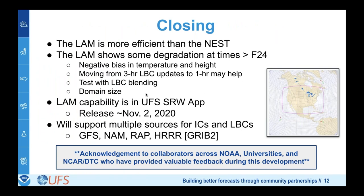In closing: the LAM is more efficient, not surprisingly. We do see some degradation after forecast hour 24, with a negative bias creeping in — likely due to the three-hour lateral boundary update frequency being too coarse; finer updates on the order of one hour would probably help. The limited area capability is missing two-way feedback that the nest has. The limited area capability will be part of the UFS short-range weather app release in November, supporting multiple sources for initial and lateral boundary conditions. Thanks to all collaborators across NOAA, universities, and NCAR DTC.